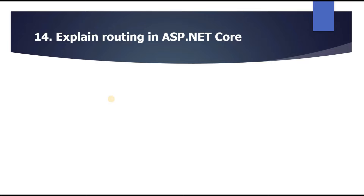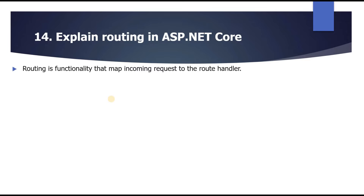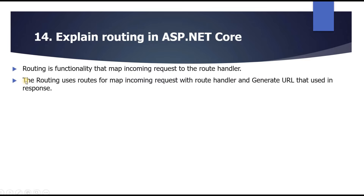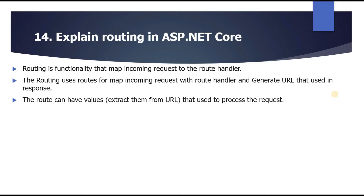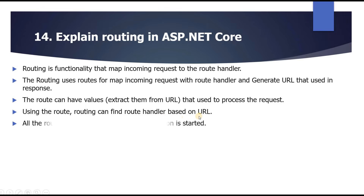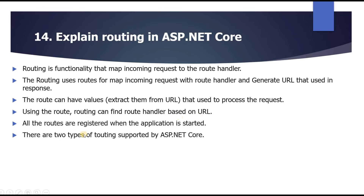The next question is: explain routing in ASP.NET Core. Routing is functionality that maps incoming requests to route handlers. It uses routes to map incoming requests with route handlers and generates URLs used in responses. The route can extract values from the URL to process requests, and routing can find a route handler based on URL. All routes are registered when the application starts. There are two types of routing: conventional-based routing and attribute-based routing.